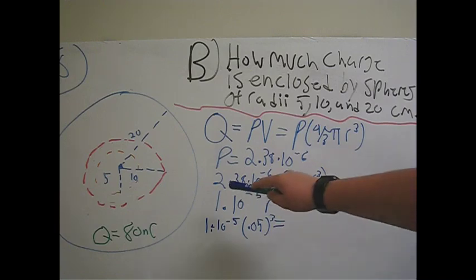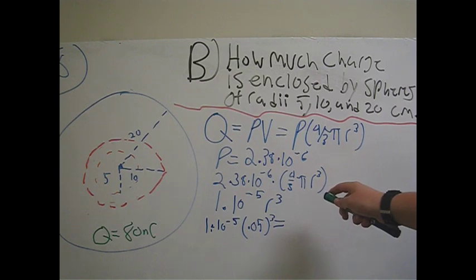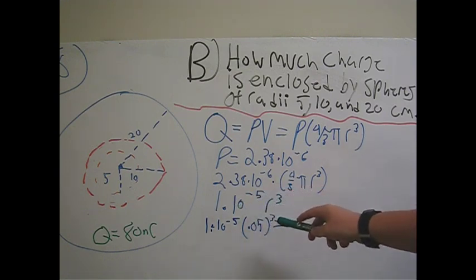Plugging in, we have 2.38 times 10⁻⁶ times 4/3 π r³, which reduces down to 1 times 10⁻⁵ r³.